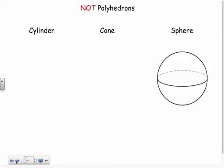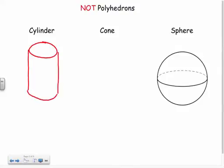Things that are not polyhedrons are cylinders, cones, and spheres, because they don't have entirely flat surfaces. Let's practice drawing these. Cylinders aren't so bad — like a pop can. Start with the top surface, bring the sides down, put the bottom half circle, and use dashes for anything hidden in the background.